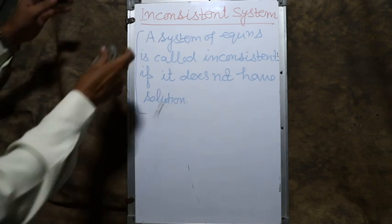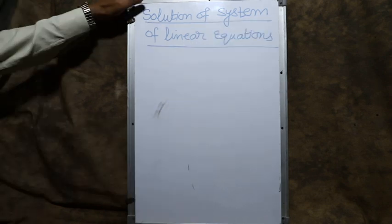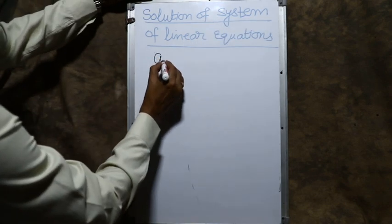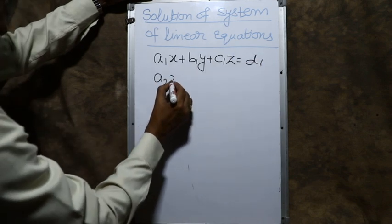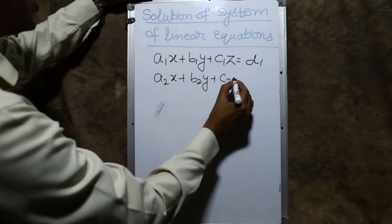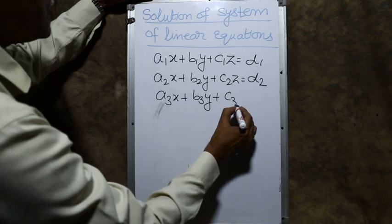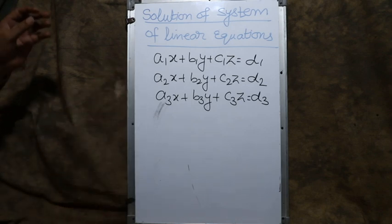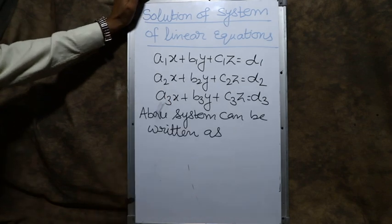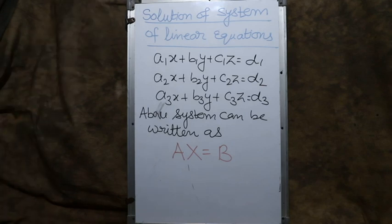Now, solution of the system of linear equations. Suppose we have a system of equations: a₁x + b₁y + c₁z = d₁, a₂x + b₂y + c₂z = d₂, a₃x + b₃y + c₃z = d₃. This is the system of linear equations. The above system can be expressed in terms of the product of matrices as AX = B, where A, X, and B are matrices.